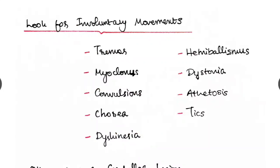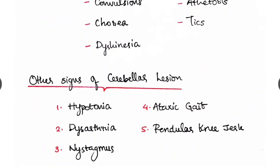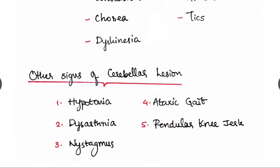And in cerebellar or coordination, look for involuntary movements like tremor, myoclonus, convulsions, tics, etc. And other signs of cerebellar lesions: hypotonia will be present, dysarthria is seen, nystagmus can be seen, ataxic gait and pendular knee jerks are other important signs of cerebellar lesion.